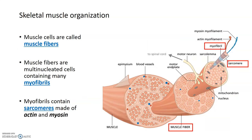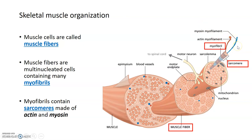In a muscle, there are many muscle cells which are known as fibers. Each of these muscle fibers is a multi-nucleated cell that contains many specialized organelles called myofibrils. Each of these myofibrils contains sarcomeres, which are the contractile units of muscle. Sarcomeres are made up of two filaments: an actin myofilament and a myosin myofilament.